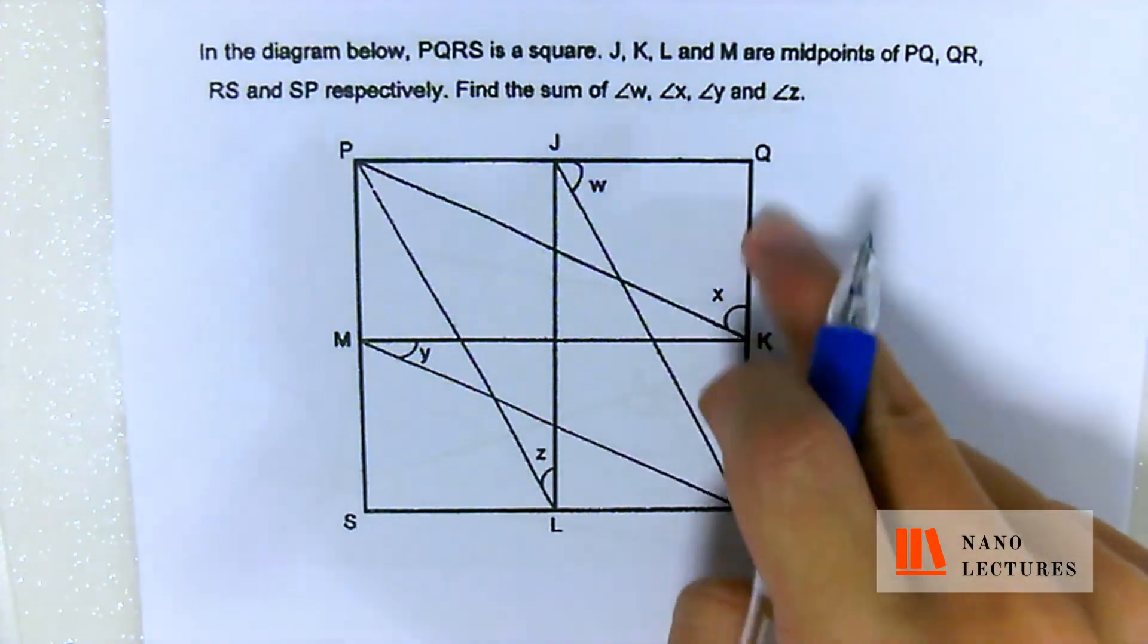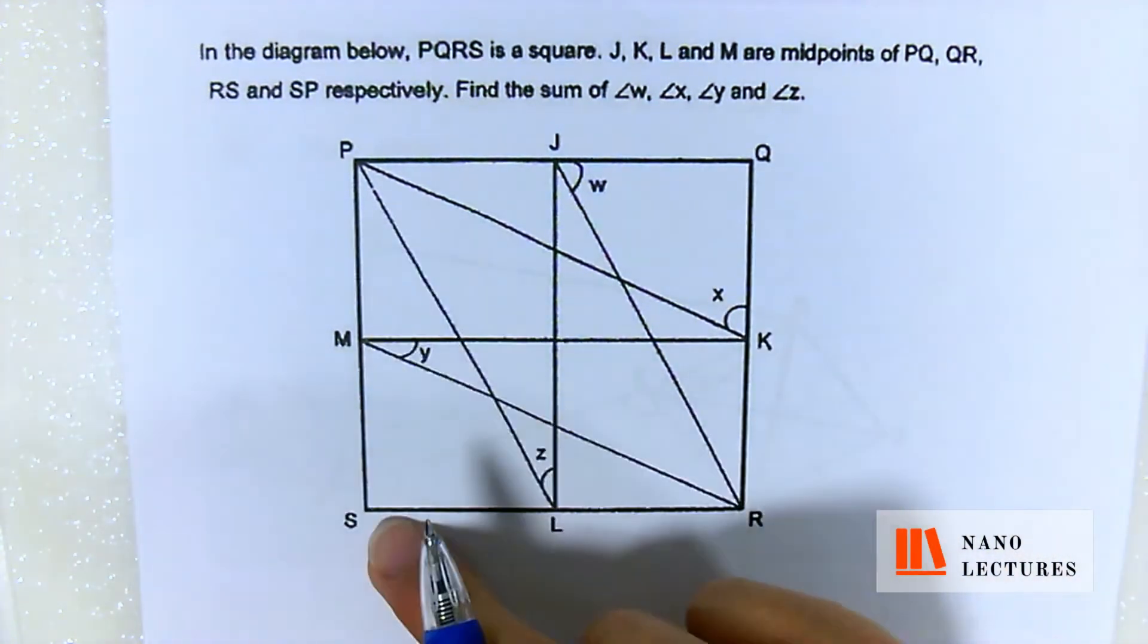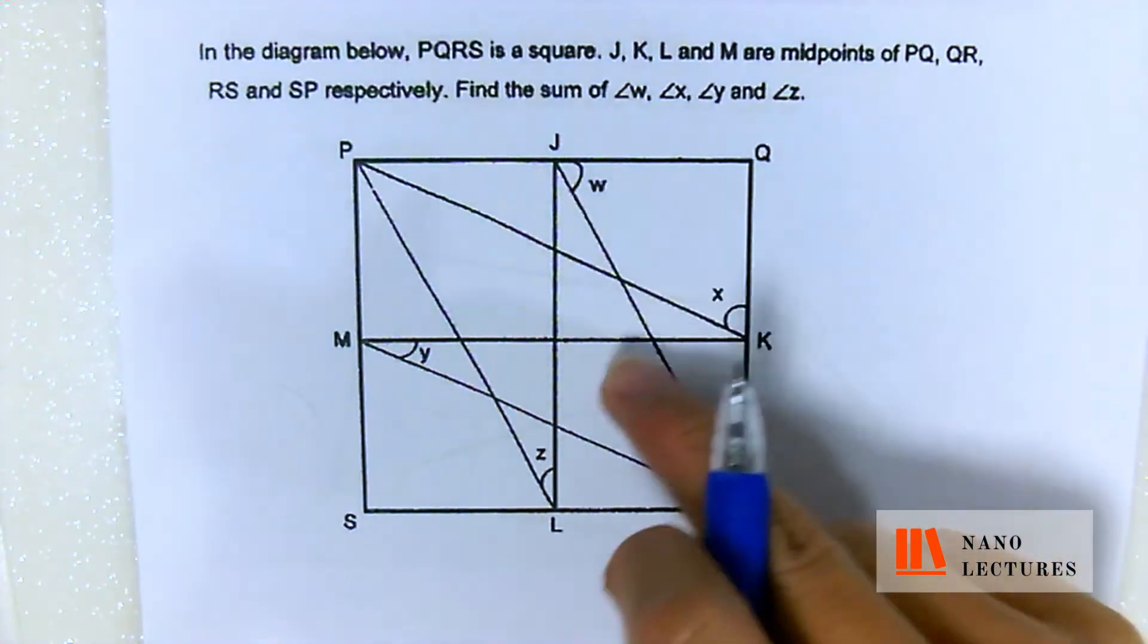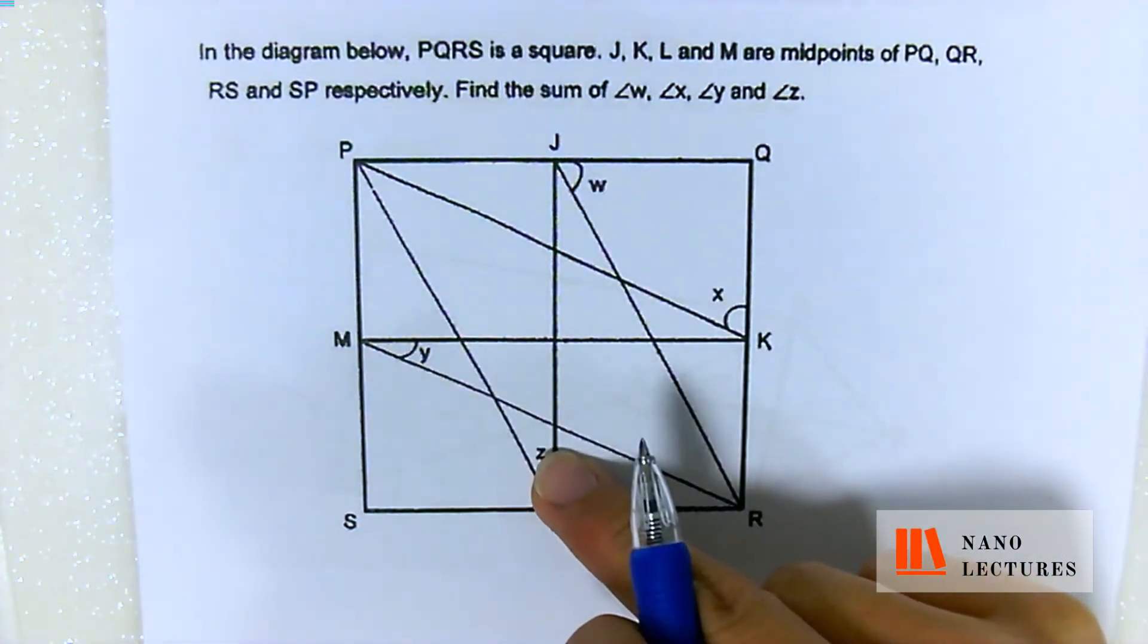And then this is the midpoint, midpoint, midpoint, midpoint. And then they ask you to find the sum of angles W, X, Y, and Z together.